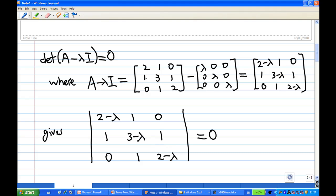What is A minus λI now? A is [2 1 0; 1 3 1; 0 1 2]. I is a 3 by 3 identity matrix. And so A minus λI will be [(2-λ) 1 0; 1 (3-λ) 1; 0 1 (2-λ)].